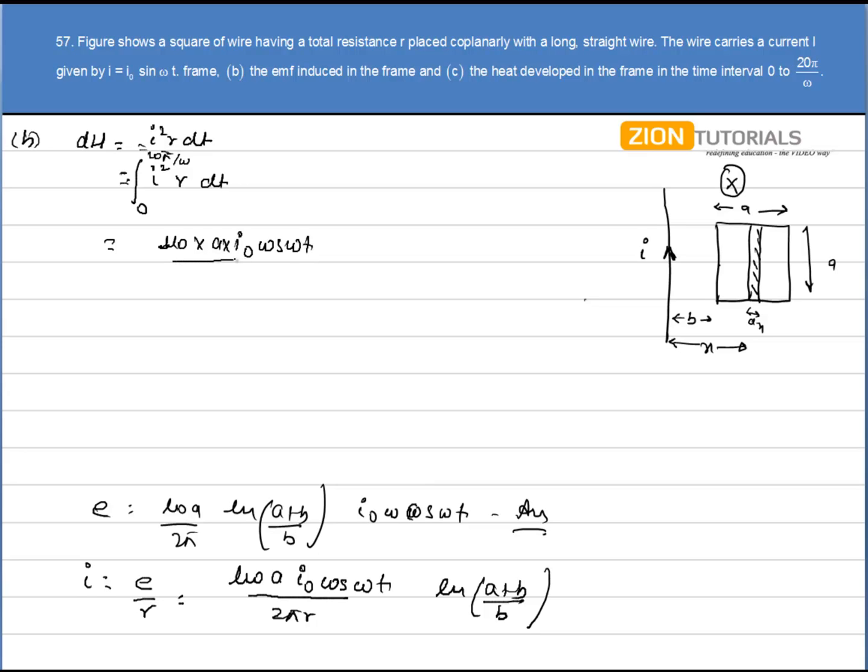So I have mu not into A into i not cos omega t divided by 2 pi r, natural log of A plus B by B whole square into R into dt, integrated from 0 to 20 pi by omega.